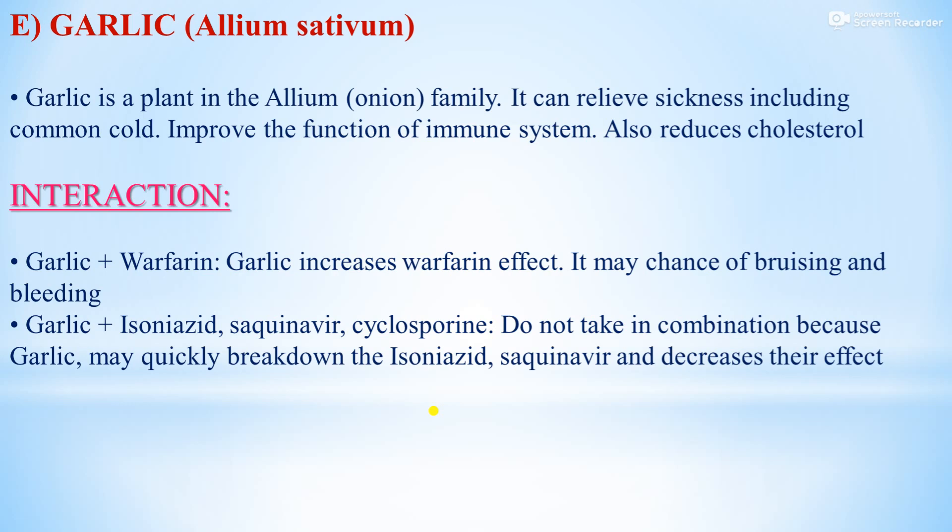The fifth drug is Garlic, that is Allium sativum. Garlic is a plant in the Allium (onion) family. It can reduce sickness including the common cold, improve the function of the immune system, and also reduces cholesterol.